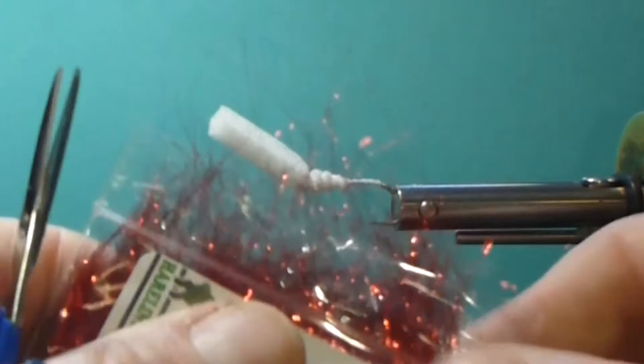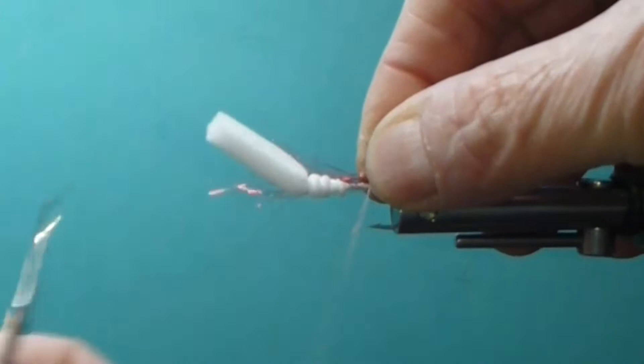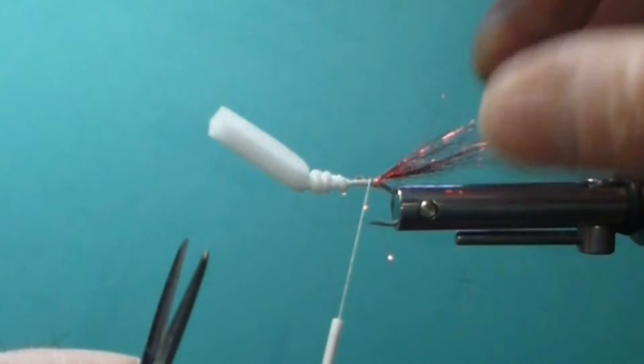I'll just grab some of my red ice dub, I'll pinch that on top, gives it a little accent underneath the hide on that rabbit strip.